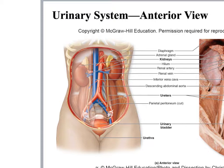The kidney is bean shaped and has a hilum — a little indentation on the medial side that allows blood vessels to enter and exit, and also allows the ureter to exit. On top of the kidney, the little top hat is the adrenal gland. Adrenal glands produce a number of hormones, including aldosterone. Off the descending aorta is the renal artery — the blood vessel going to the kidney — and the renal vein, which enters the inferior vena cava. The ureters exit on either side and attach to the bladder.